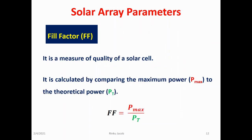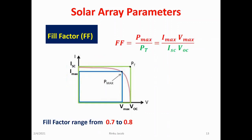The fourth parameter is called the fill factor, denoted by FF. The fill factor is the relationship between the maximum power that the array can actually provide under normal operating conditions and the product of the open circuit voltage multiplied by the short circuit current, that is VOC multiplied by ISC. This fill factor value gives an idea of the quality of the array, and the closer the fill factor is to unity, the more power the array can provide. Typical values are between 0.7 and 0.8.